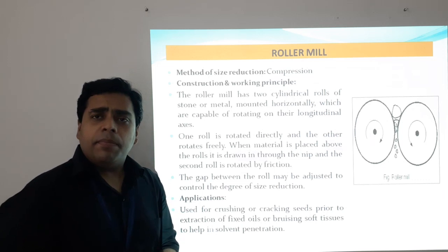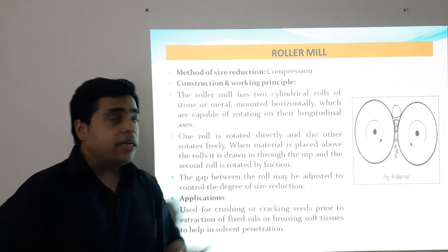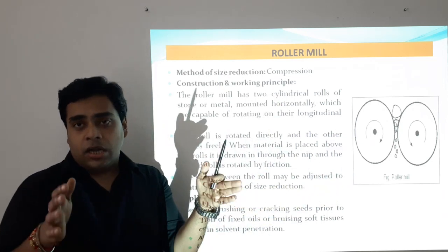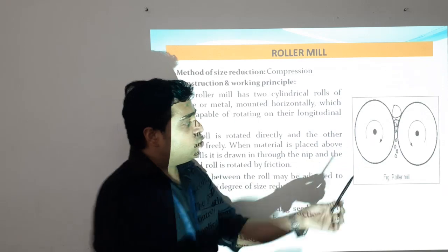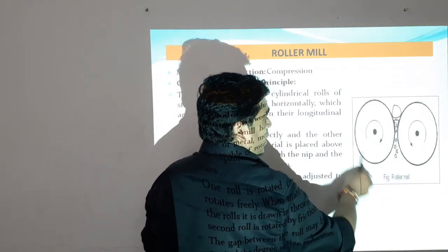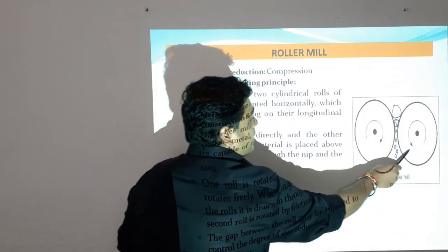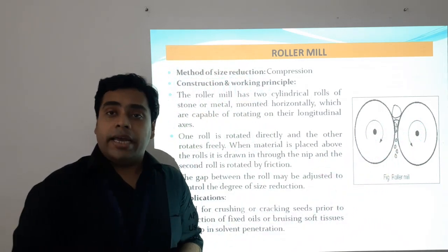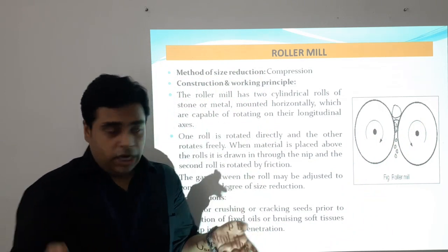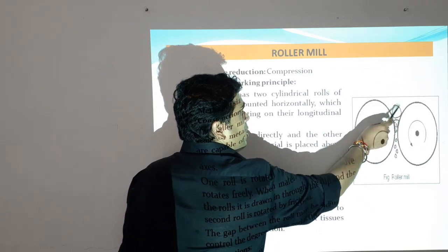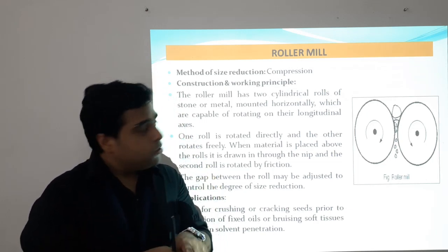Next, another very basic mill — the roller mill. The method of size reduction here is compression. This is a diagrammatic representation showing two rollers: one moving roller rotating in one direction and another rotating in the opposite direction. The rollers are adjusted to move in opposite directions, and feed is entered with the help of a hopper from in between. The distance between the two rollers can also be adjusted.